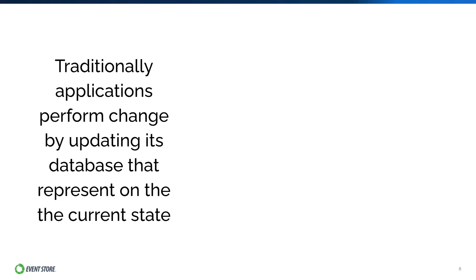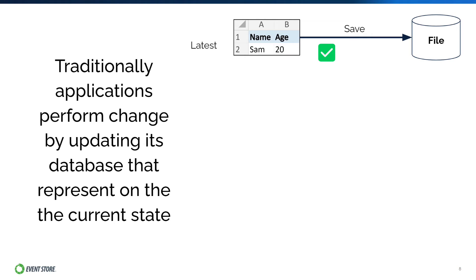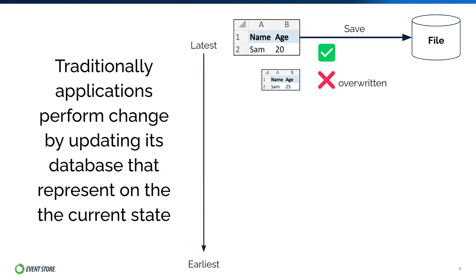At its core, event sourcing is a very simple application pattern. Traditionally, an application performs change by updating its database tables that represent only the current state. Think about this in the context of updating a spreadsheet. When you save and update a spreadsheet, only the most up-to-date current state of that spreadsheet is saved to a file. The past versions of the spreadsheet are overwritten, and so are the previous versions before.